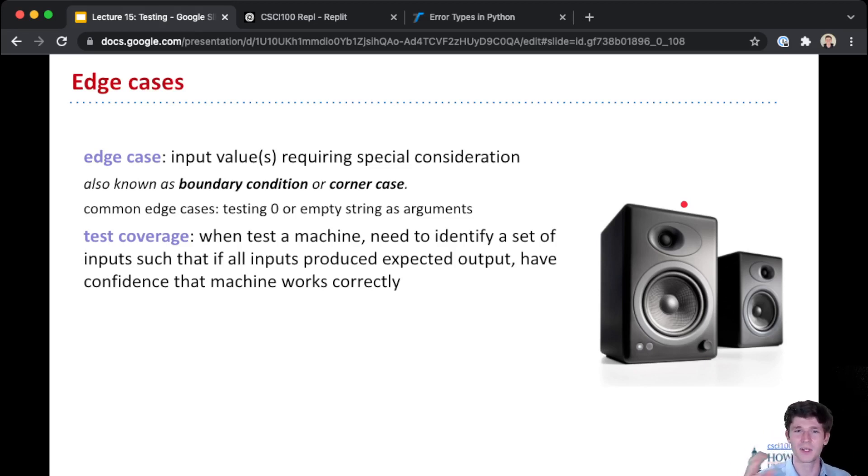But an edge case is one of the input values that requires special consideration. So for example, in a function that finds the average of the numbers in a list, an empty list would be an edge case. You'd want to make sure that for some unusual thing that has some weird behavior to it, which for an empty list is the fact that the list has a length of zero, you want to think about that case carefully. Sometimes when you find an edge case, the best way to fix your code is to write a special conditional at the top of your function that just handles the edge case.